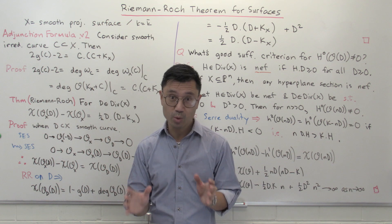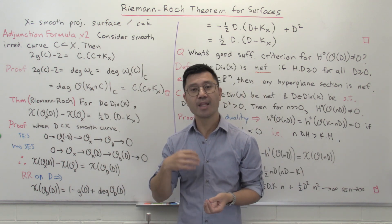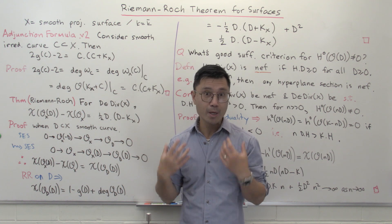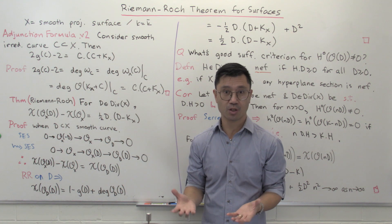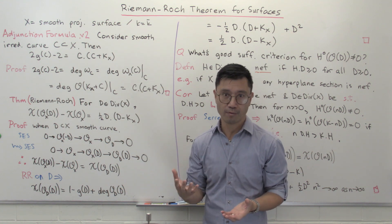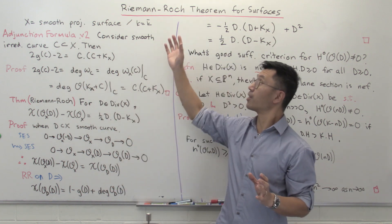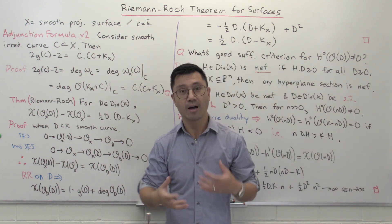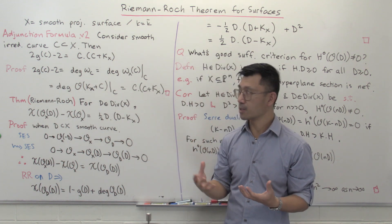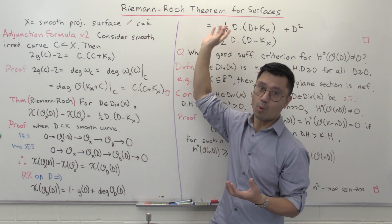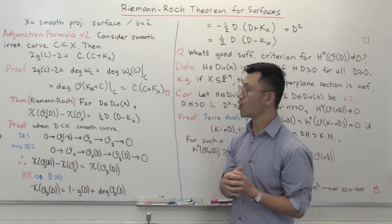Hi, I'm Daniel Chan from UNSW Sydney. Welcome to another adventure in pure mathematics. In this playlist, we've seen that the Riemann-Roch theorem is an indispensable tool for studying the space of global sections of a line bundle on a curve. What I want to show you in this video is the Riemann-Roch theorem for surfaces and how it plays a very similar role to what it does in the case of curves. It is of course somewhat trickier to use, but nevertheless it's very important in the theory of surfaces.